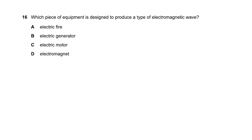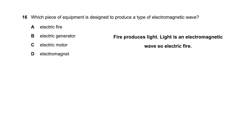Which piece of equipment is designed to produce a type of electromagnetic wave? An electromagnet produces no EM wave; an electric motor produces torque; an electric generator produces current (not an EM wave). An electric fire produces light, and light is an electromagnetic wave. So option A (electric fire) is correct.